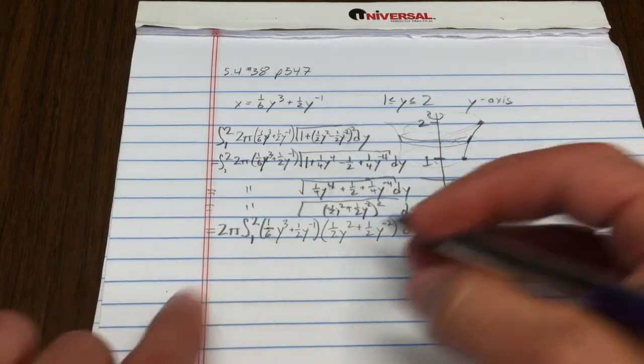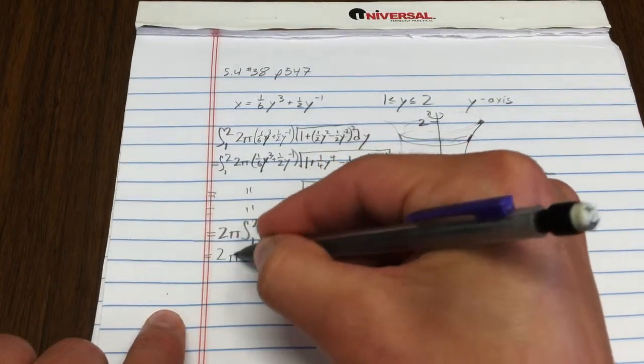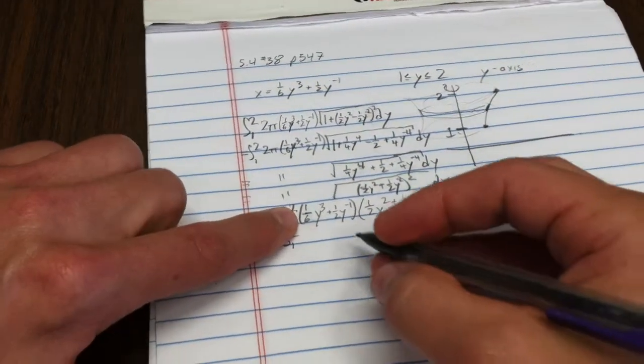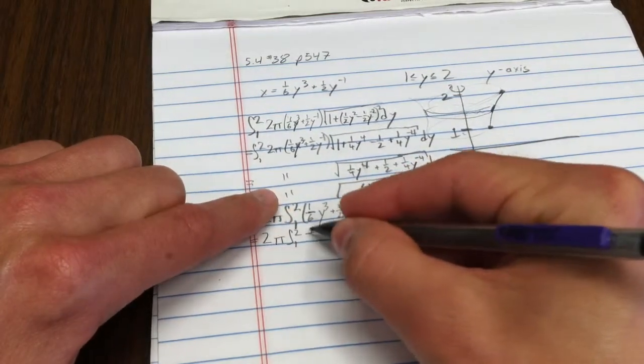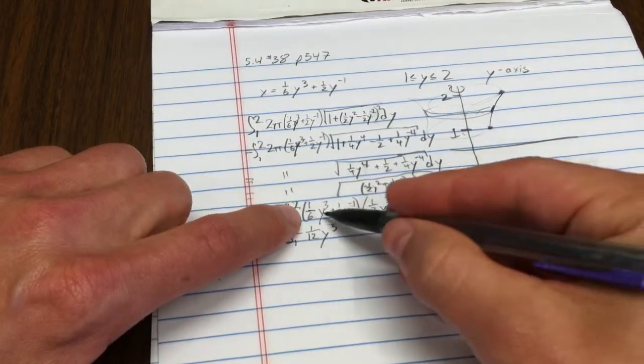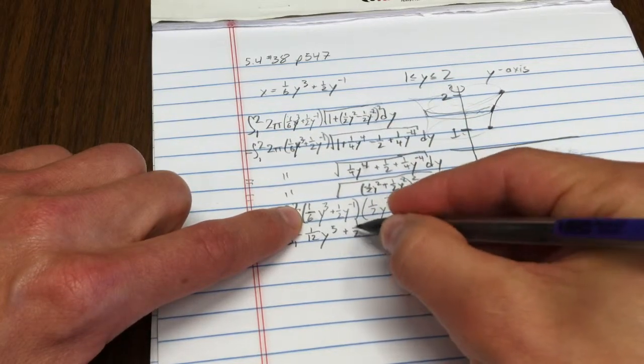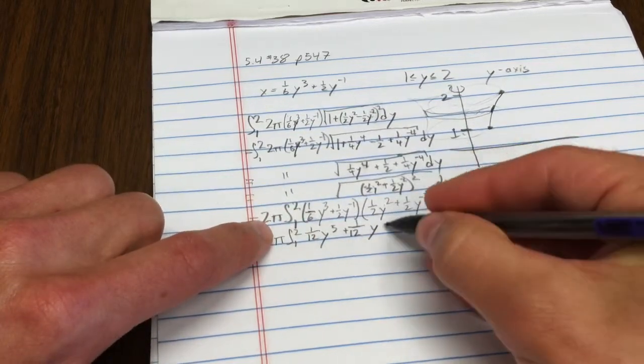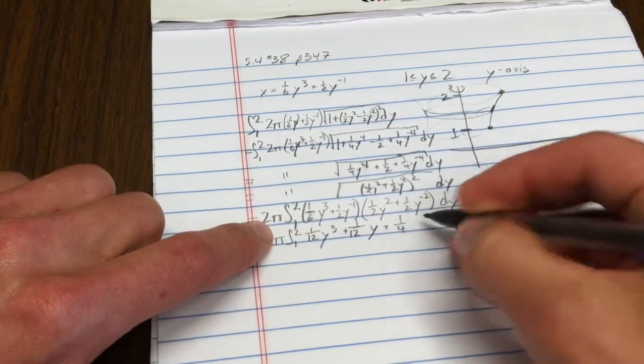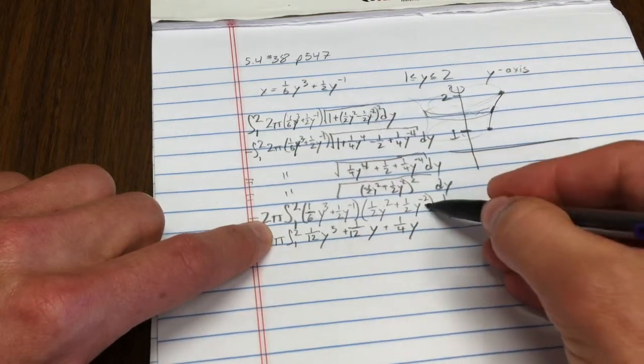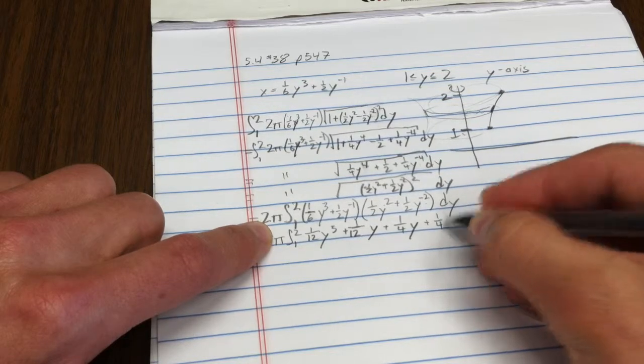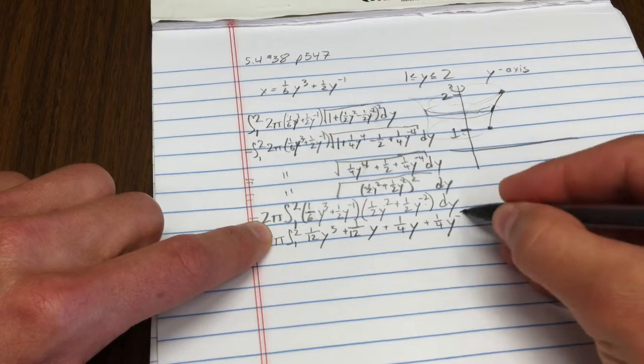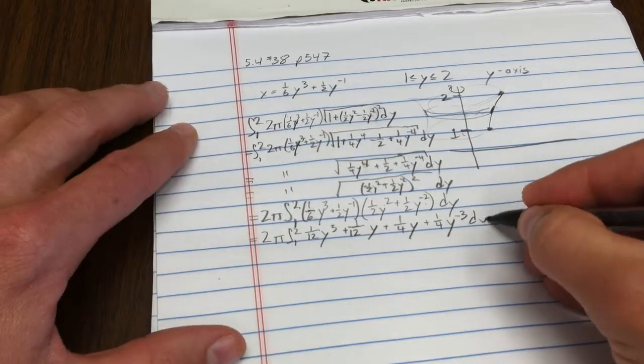Now I have something that I can just multiply out, then I can integrate quite easily. So one last step before I integrate: notice what's happening here. I have one-twelfth y to the fifth, and this times that is one-twelfth. This term times that term is one-fourth y. This term times that term is one-fourth y to the negative three. So time to integrate.